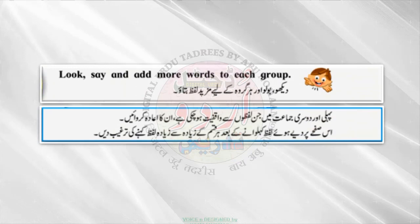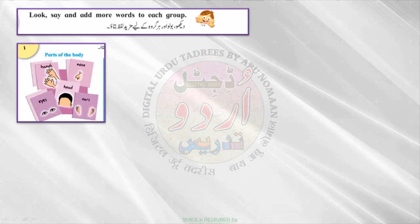Okay, we'll move forward — look, say, and add more words to each group. This is revision, children. This is revision, meaning we will revise the words we studied in Grade 1 and Grade 2. On page number two, whatever group appears before you, we will read those words. Now let's move to page number two of your book — this is the first group here.